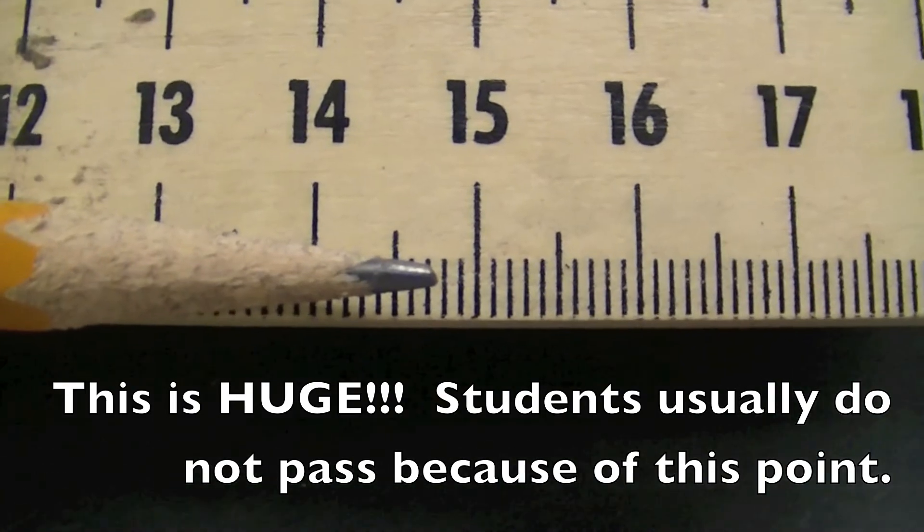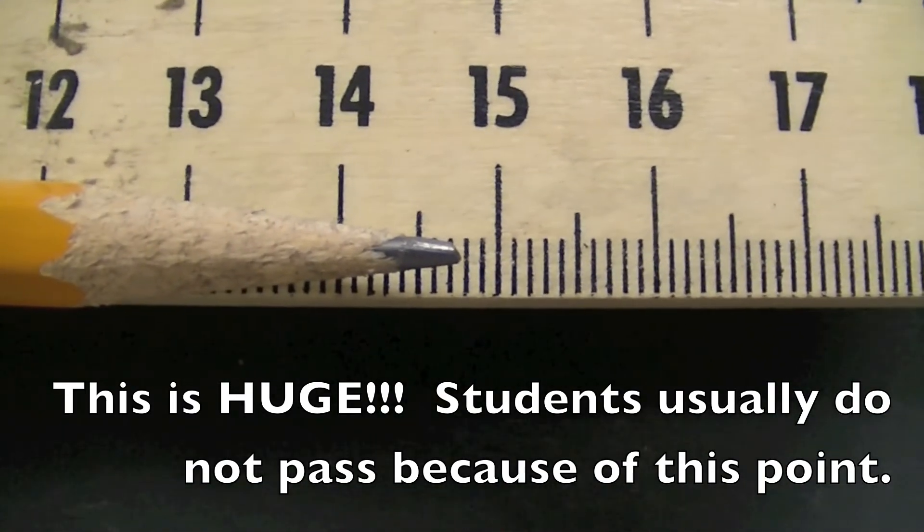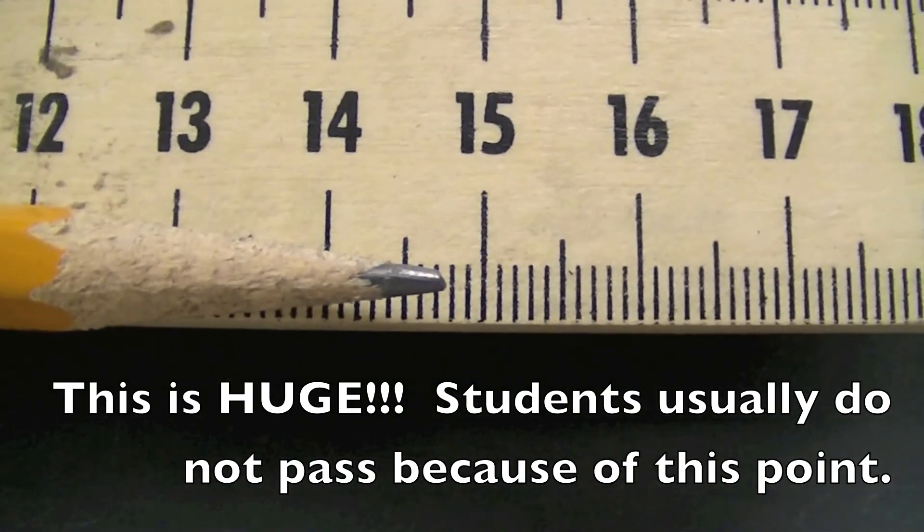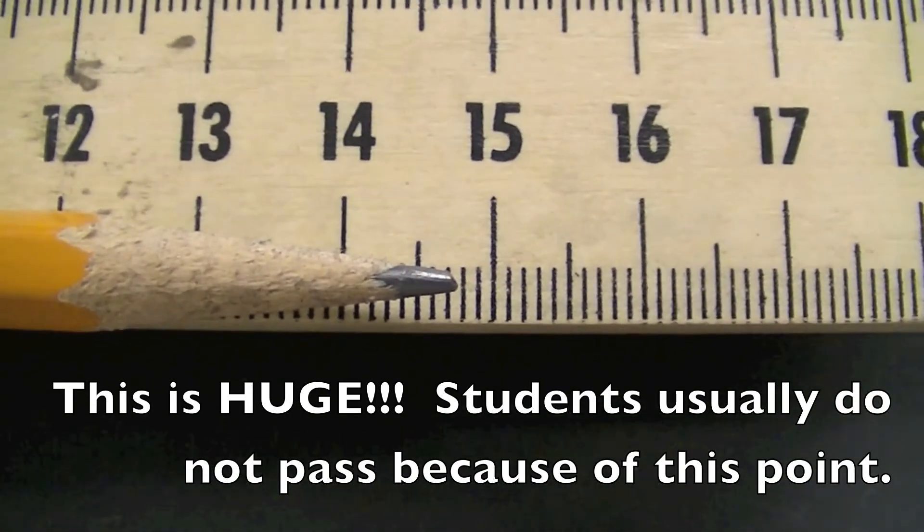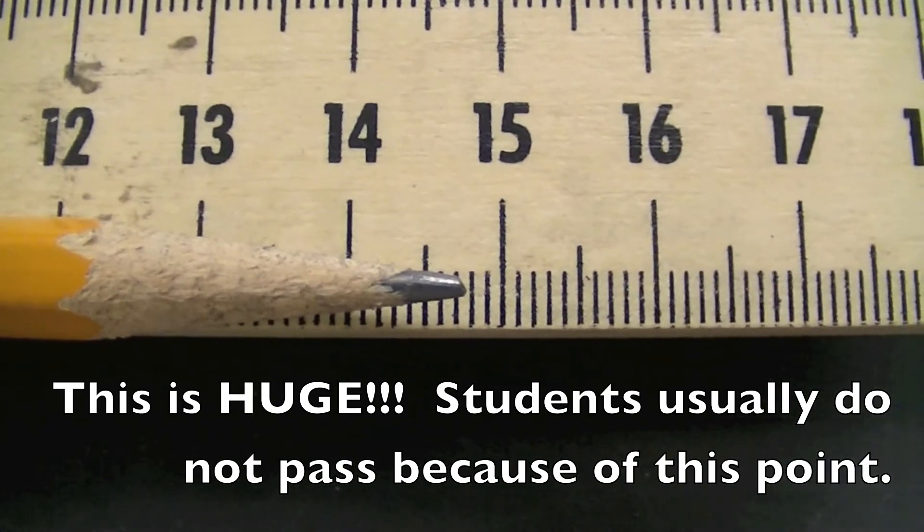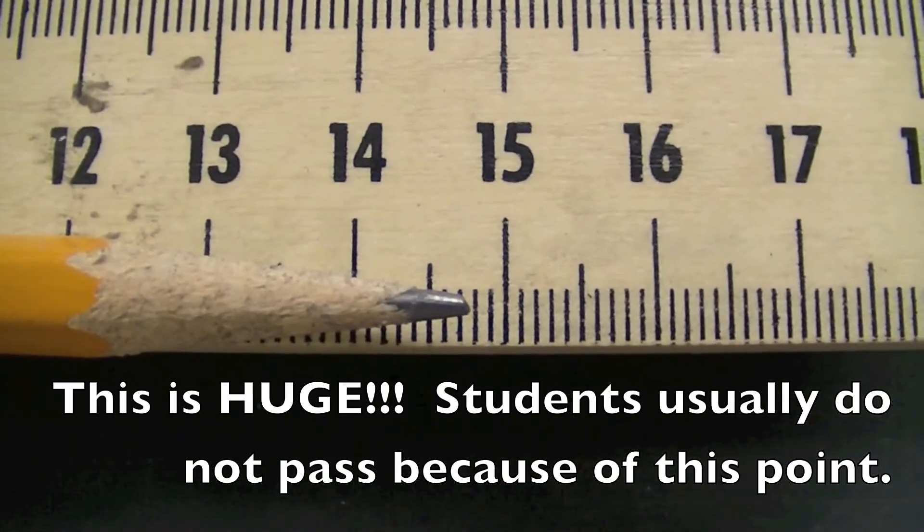So in this case, we see that 14.7 centimeters is roughly what it is. But since it only goes to millimeters, we want to go one digit past that. So we want to make it 14.78, and that increases our estimation accuracy.